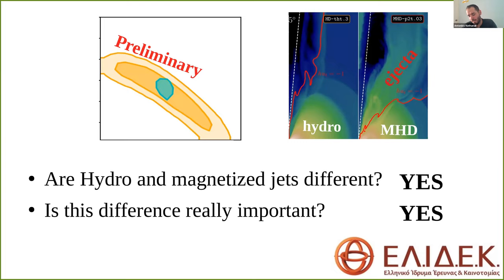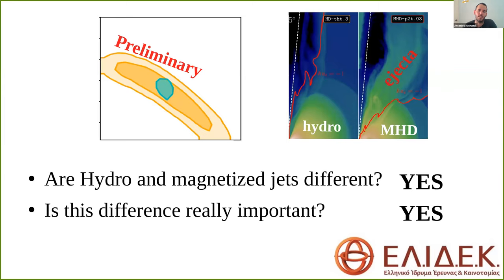To summarize: hydro and magnetized jets are really different—I hope I have persuaded you. They differ in the jet shape and its imprint on the afterglow emission, especially the viewing angle, but also in the amount of mass ejected, which is important for kilonova observations one to two days after merger and for late-time afterglow. Is this difference really important? Yes, because it can drive us to different and better Hubble constant estimations. Thank you.